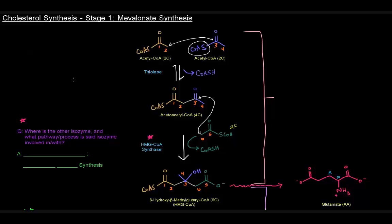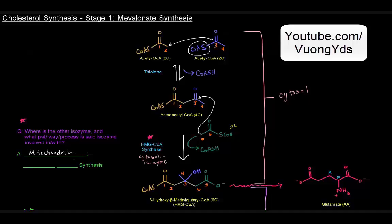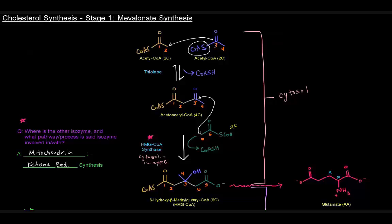Before I answer that, these first two steps bound by this light pink bracket occur in the cytosol of the cell. So this HMG-CoA synthase is the cytosolic isozyme. The other isozyme is located in the mitochondria, and the pathway or process it's involved in is ketone body synthesis, which is something we haven't talked about in any of my videos yet, at least as of the recording of this video.